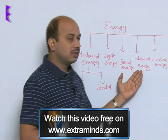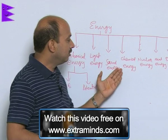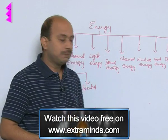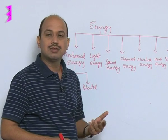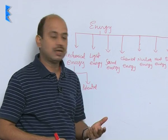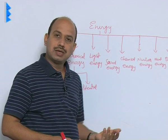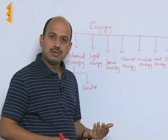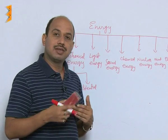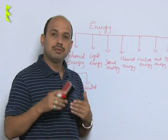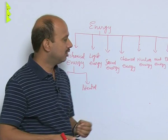Chemical energy is released when something is burnt. If you burn petrol, diesel, or kerosene, you get energy that is known as chemical energy. Even when coal is burnt, that is chemical energy, and by burning coal we can get steam. That steam can be used to run a device like a dynamo, and we can get electrical energy.